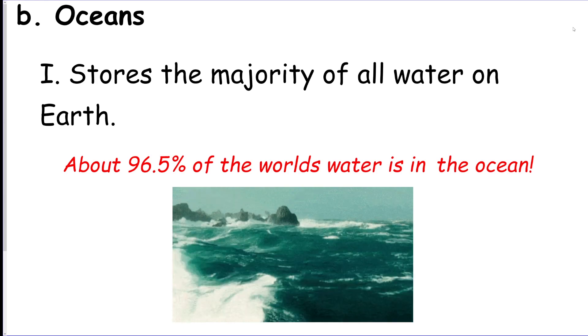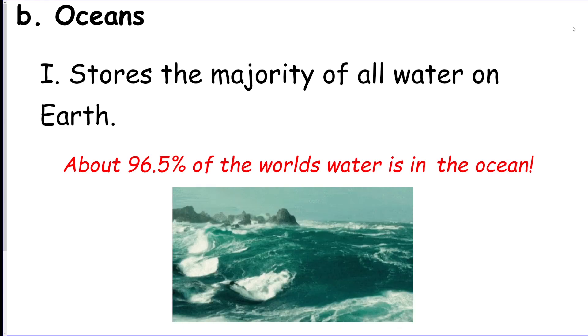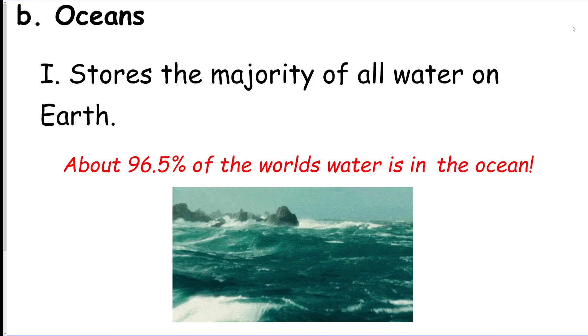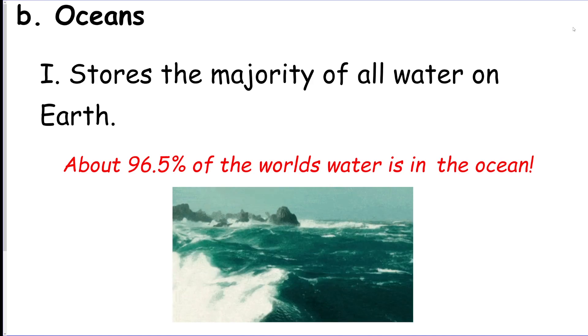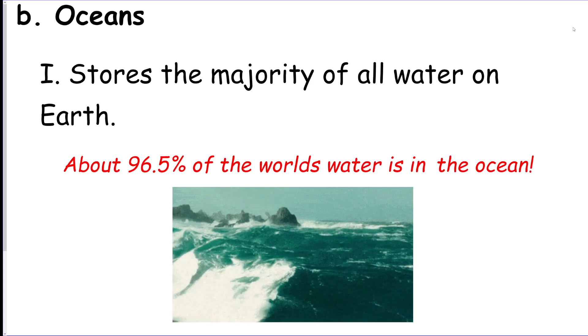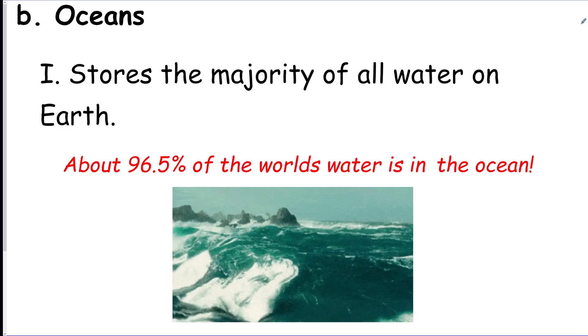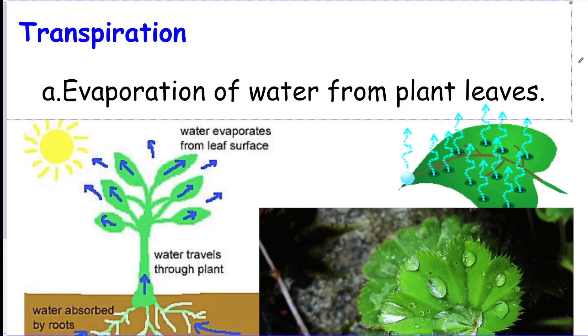Most of the water that goes up into the air from evaporation is going to come from the ocean because it's such a vast and gigantic body of water with nothing really blocking it. The sun just heats it up all day and it ends up evaporating.